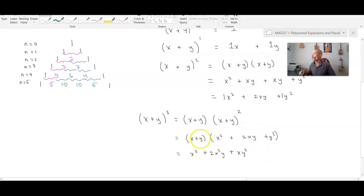And now I'm going to work on the y term, y times x squared, y times 2xy, which will give me 2xy squared. And then y times y squared, which will give me plus a y cubed.